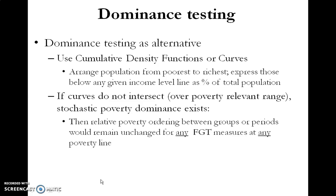When stochastic poverty dominance exists, any relative poverty ordering between groups or periods will remain unchanged for any FGT measure used at any poverty line — so that holds for P0, P1, or P2, and for any given poverty line. Dominance testing makes the use of setting a poverty line redundant if you have stochastic poverty dominance.